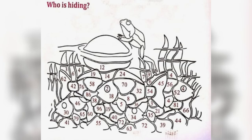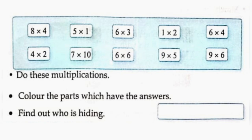Who is hiding? Do these multiplications. 8 into 4 is 32. 5 into 1 is 5. 6 into 3 is 18. 1 into 2 is 2. 6 into 4 is 24.